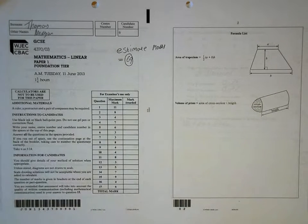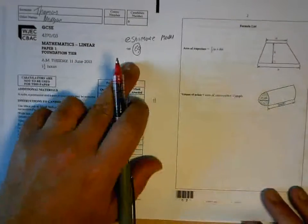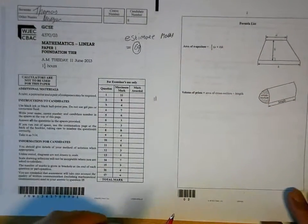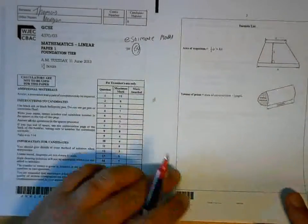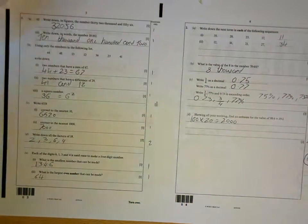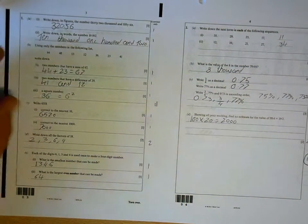Right there, Morgan. Well, you did the foundation tier back in the summer, and when you sat, you were 105, which was a D. So you're about 15 marks off, maybe, what you need for a grade C. You estimate on this paper you've got 69. If you get 69, that's good enough for a C. Let's see how close to 69 you are.